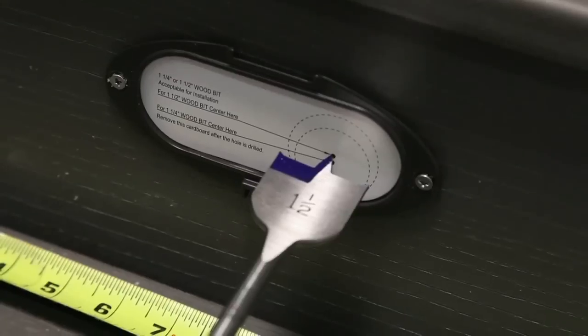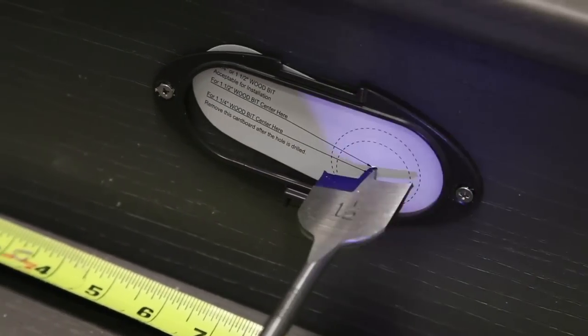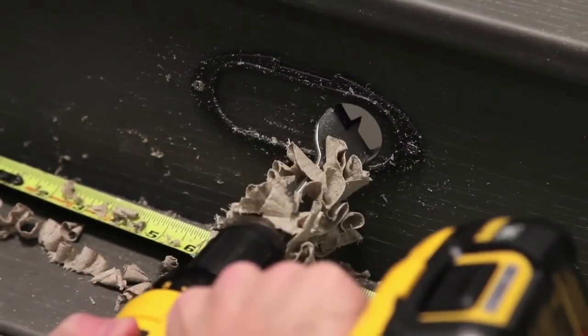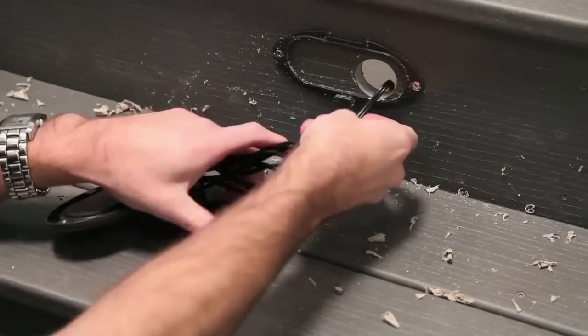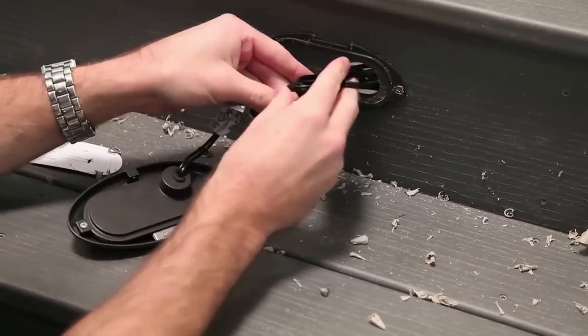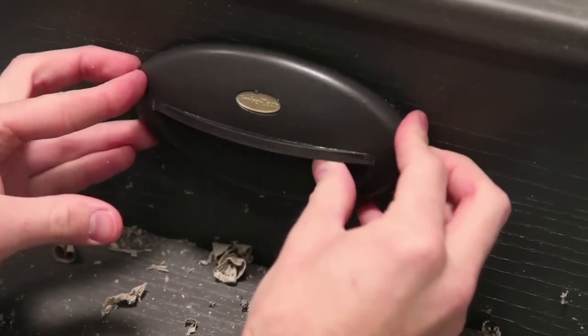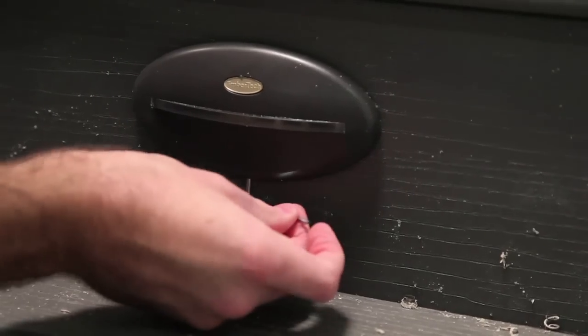Using the backplate and the provided template, locate the center of the 1 and 1-1/2 inch hole and drill using a spade bit. Trim excess wire and make wiring connections. Secure the housing of the light to the backplate using the set screw and the allen wrench.